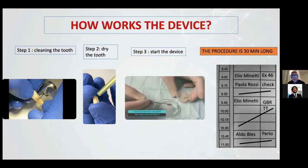Because the procedure is 30 minutes long, I suggest to do one thing. Normally I do the extraction at nine o'clock and place another patient during the 30 minutes of the procedure. After 30 minutes, I start the GBR with TT. So I save time and I save money.